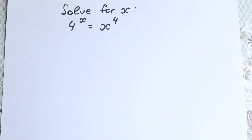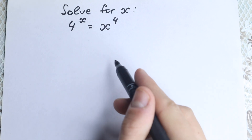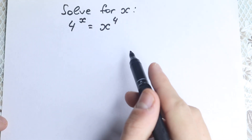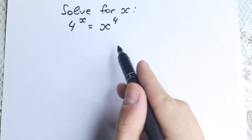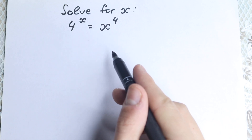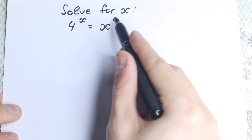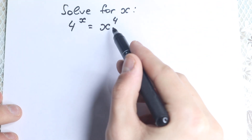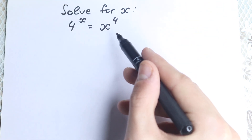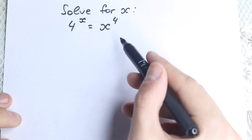Hello everyone, happy to see you here. In this video we are going to solve this really interesting exponential equation: 4 to the x equal to x to the fourth power. What about our x? A lot of students see the obvious solution, but let's find all solutions, because with a fourth power we will have no more than 4 roots.